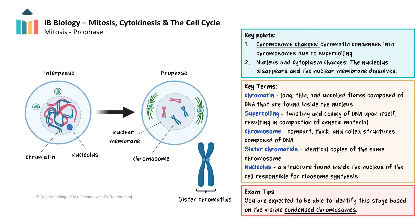As the cell transitions from interphase to prophase, one of the most significant changes is the condensation of chromatin into a more compact structure called chromosomes. This condensation is crucial for the accurate segregation of genetic material during cell division. As prophase begins, chromatin fibres start to coil and condense as a result of supercoiling, and they become visible as distinct structures called chromosomes. Each chromosome consists of two identical sister chromatids joined together at a region called the centromere. During prophase, the nucleolus gradually fades and becomes less distinct, indicating the cell is preparing for division.